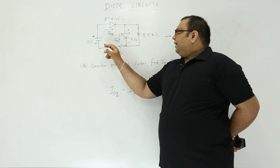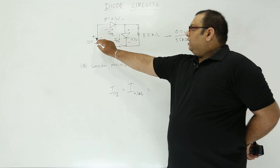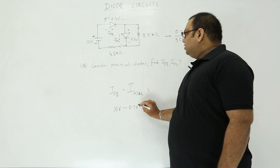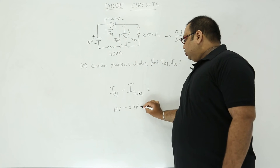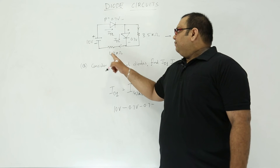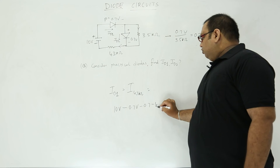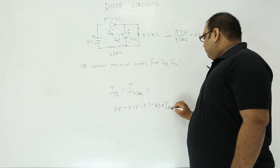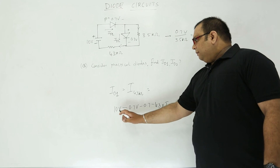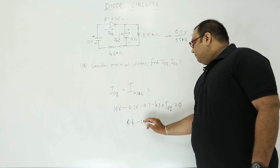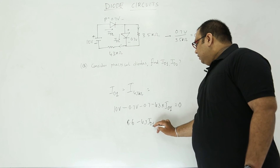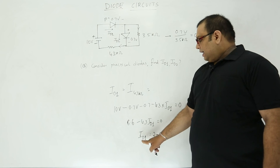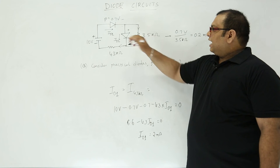To find the current through the 4.3 kΩ, we take a loop equation: 10 volts minus a 0.7 volt drop minus another 0.7 volt drop minus 4.3 kΩ multiplied by ID1 equals zero. This gives 10 minus 1.4 = 8.6, so 8.6 minus 4.3 × ID1 = 0, which gives ID1 equal to 2 milli-amperes. That is the current in the first diode.